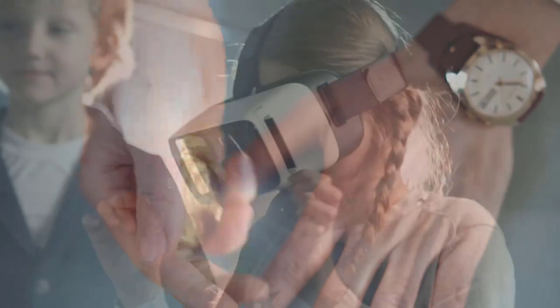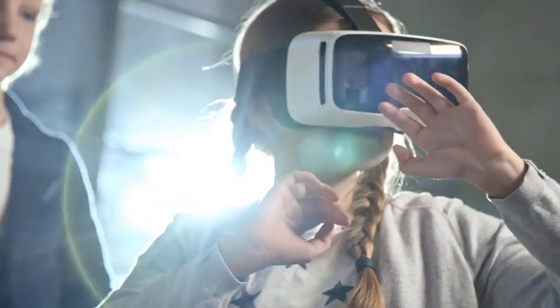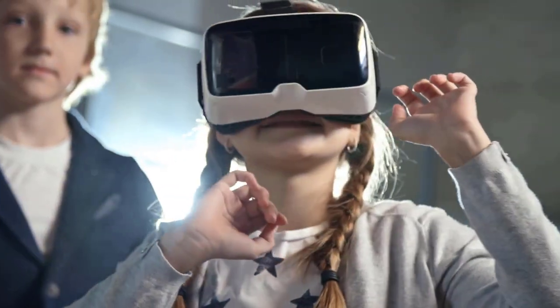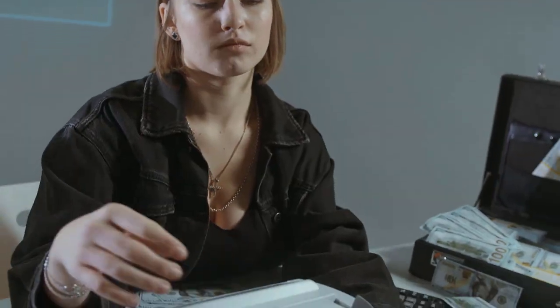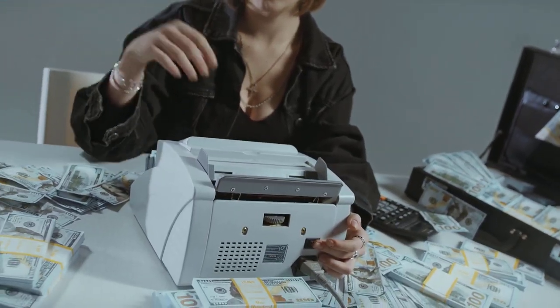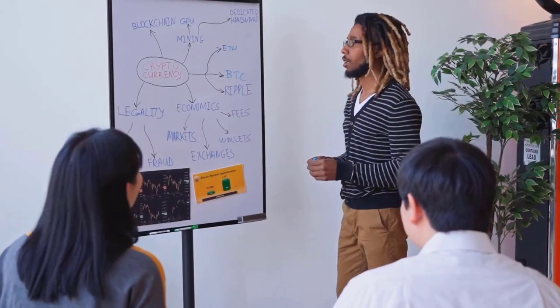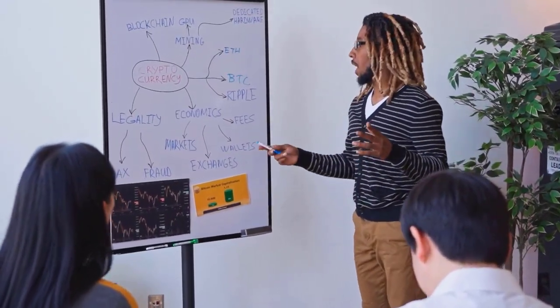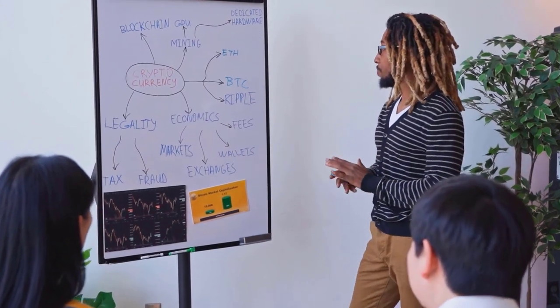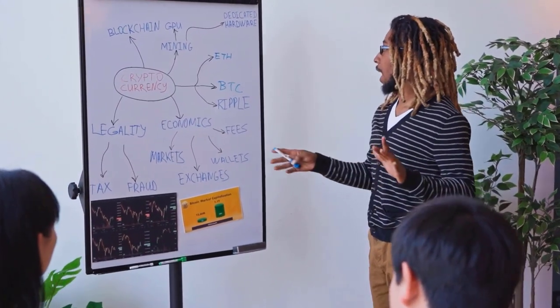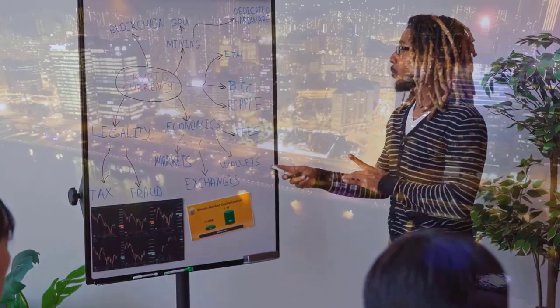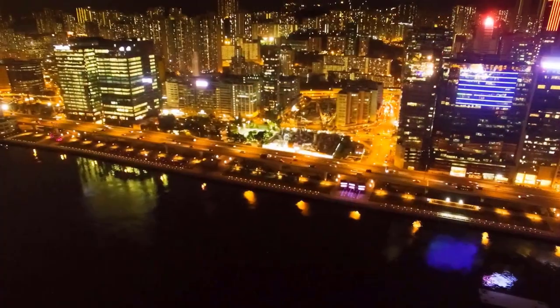ICP figure for April 2025. Initially, cost at $20.84. Excessive cost $23.19, while low cost $20.15. The normal for the month $21.46. ICP cost gauge toward the month's end $21.67, change for April 3.2%.